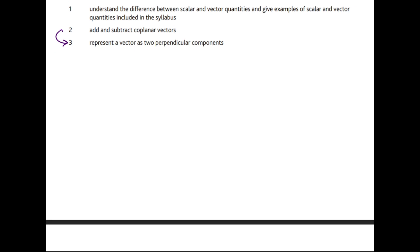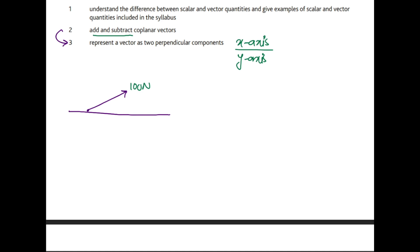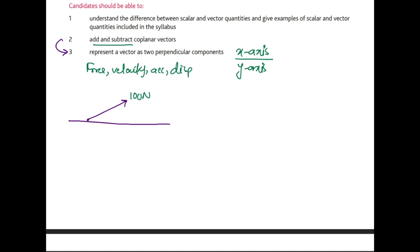First we need to understand what vector components are and how to make them. The basic idea is that a vector at any angle, in reference to north, south, east, and west, can be represented in its components. Those two components are: one along the x-axis and one along the y-axis, so that we can use them to add and subtract vectors. This method applies whether the vector is a force, velocity, acceleration, or displacement.